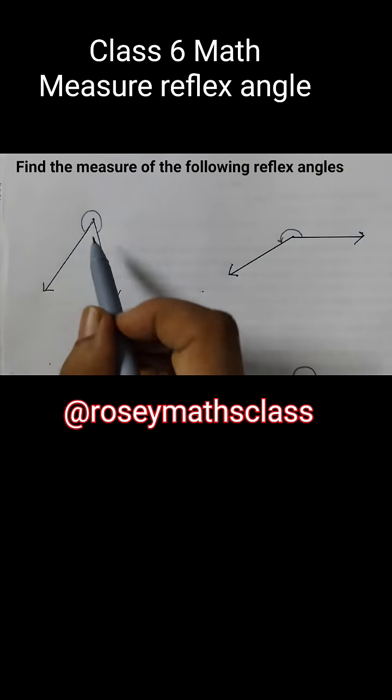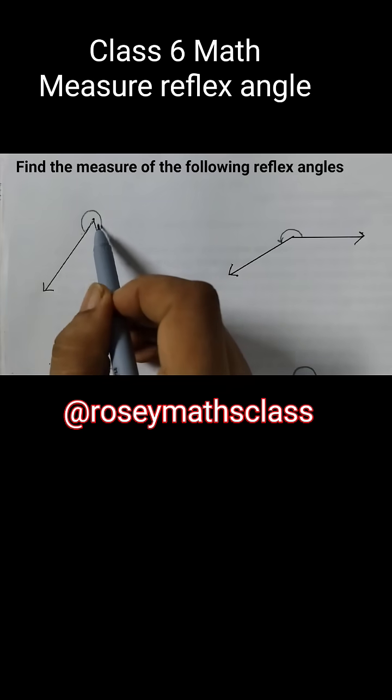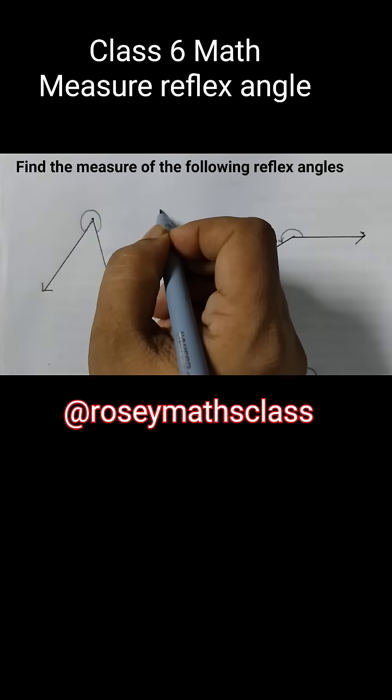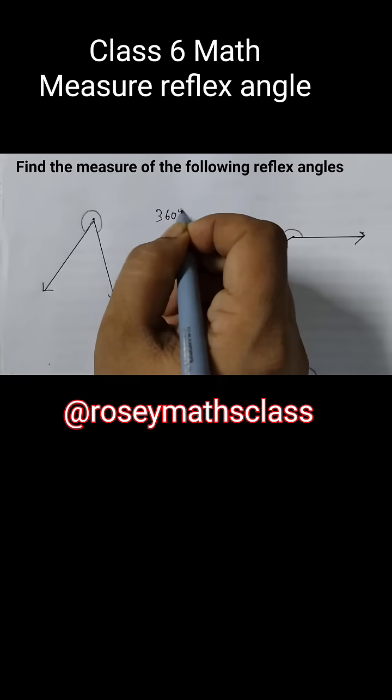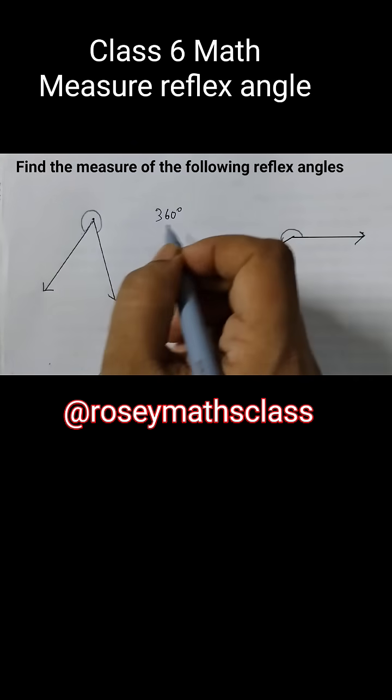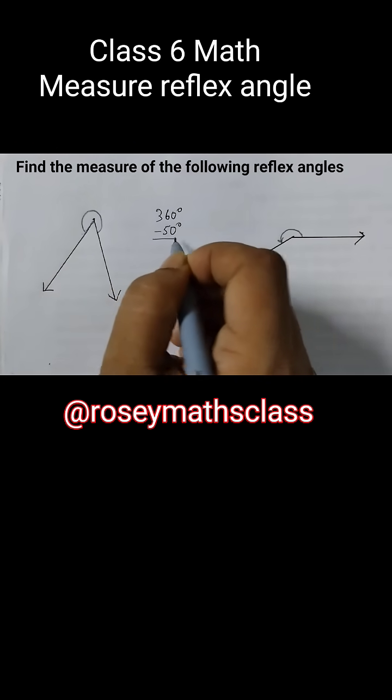This angle here is 50 degrees and we need to find out this angle, right? So we know that a complete angle is 360 degrees. And if I subtract this angle from 360 degrees,